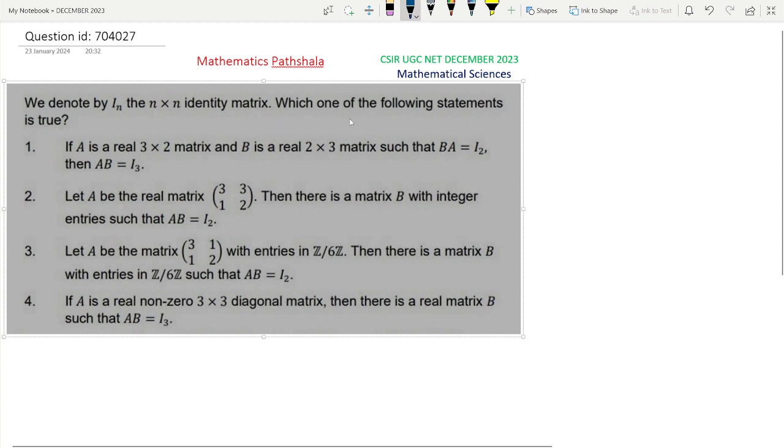See the question first. IN is the n by n identity matrix, and which of the following statements is true? For option 1, given that A is a real 3 by 2 matrix and B is a real 2 by 3 matrix such that BA equals I2, then does AB equal I3?